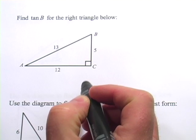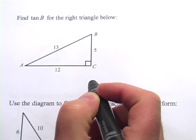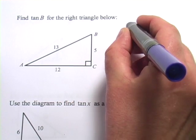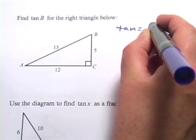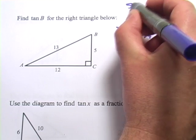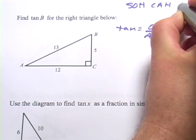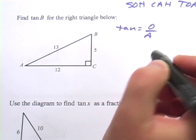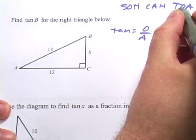Now we're going to do some problems in setting up the tangent ratio. And remember, the tangent is the opposite side over the adjacent side. Remember in SOH-CAH-TOA, that's tangent is opposite over adjacent.